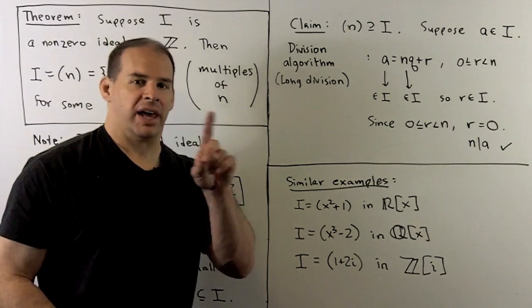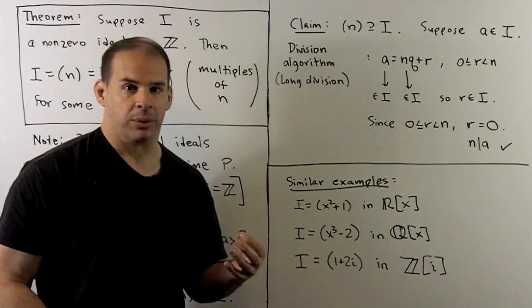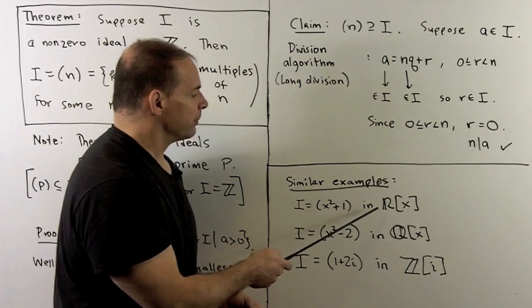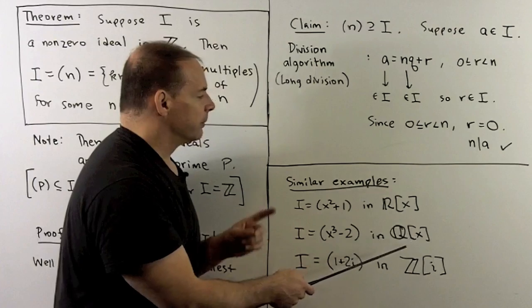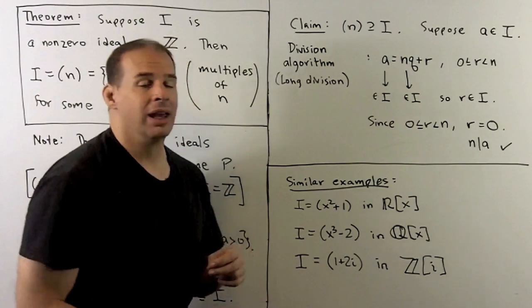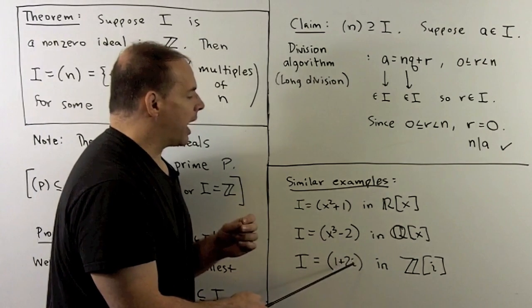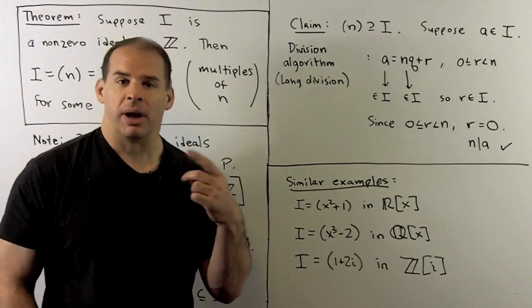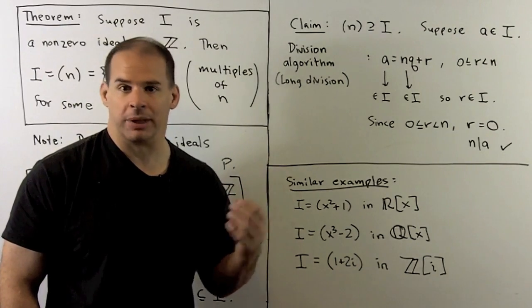That says every ideal in the integers is generated by a single element. We've seen this in other examples: in ℝ[x], polynomials in x over the reals, we consider the ideal generated by x²+1. In ℚ[x], polynomials in x over the rationals, we consider the ideal generated by x³−2. In the Gaussian integers ℤ[i], we consider the ideal generated by 1+2i. So far we've only considered ideals generated by single elements. You might think this is the case in general, but we'll see that it is not, and this leads to the definition of principal ideal.